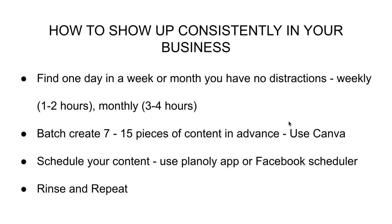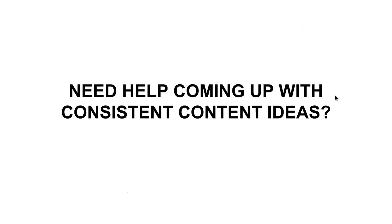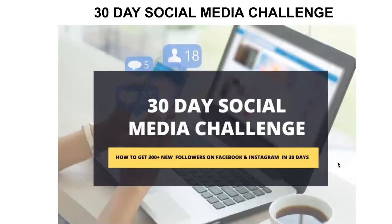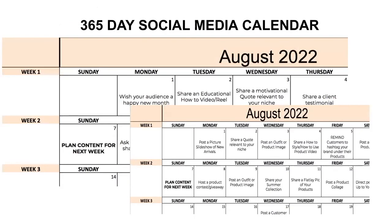Now you're probably thinking — this is great, but how do I come up with consistent ideas? What do I actually post? You're in luck because I'd like to invite you to join my 30-day social media challenge. The first thing you get with the challenge is a 365-day social media calendar — it tells you what to post every single day for the entire year, so you never run out of content ideas.